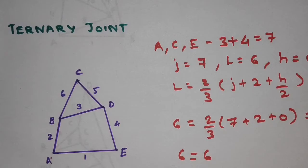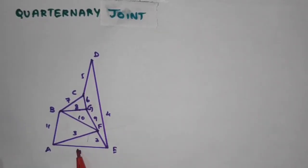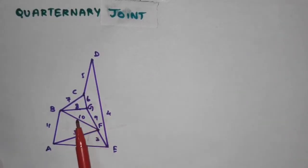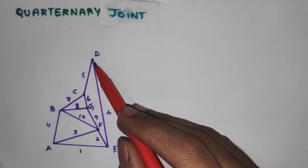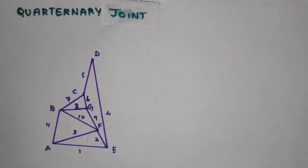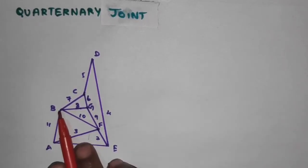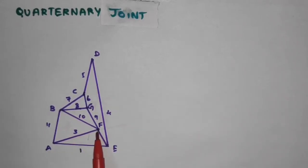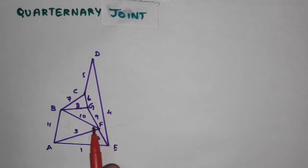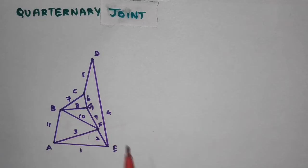Next, let us see what a quaternary joint is. A joint where four links join together to form a single joint is called a quaternary joint. In this eleven-link arrangement, at joint B, link numbers 11, 10, 8, and 7 join together. At joint F, link numbers 2, 3, 10, and 9 join together. These two joints, B and F, are the quaternary joints.